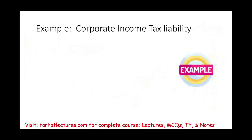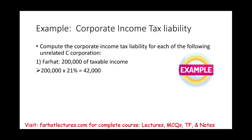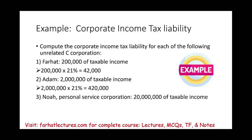Let's quickly look at an example. Compute the corporate income tax liability for each of the following independent scenarios. Farhat Corporation has $200,000 of taxable income: $200,000 times 21% equals $42,000. Adam Corporation has $2 million of taxable income: $2 million times 21%. Noah, a personal service corporation, has $20 million of taxable income — same concept, personal service corporations have the same flat tax rate as C corporations.